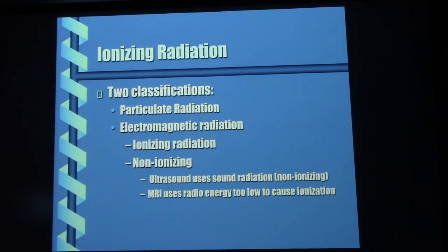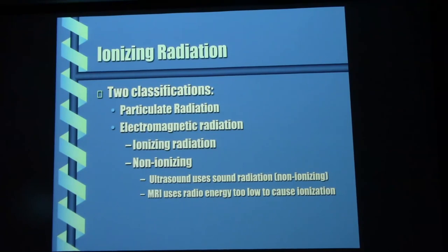Now here's something important: ionization. Because every time we take an x-ray, we ionize the patient's tissue. We don't want to — it's just a side effect of making x-rays. There are a couple different kinds of radiation. Particulate radiation includes alpha and beta particles and high-speed neutrons. It is extremely damaging. But typically the only time you're going to run into that is at a nuclear power station, where everybody wears all kinds of protection.